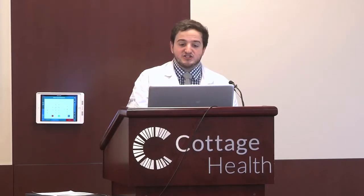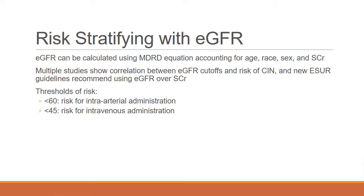What about risk stratifying with estimated GFR? The eGFR is calculated using an equation derived from a large retrospective study accounting for age, race, sex, and serum creatinine. One current recommendation from the ESUR sets the thresholds of risk: patients are at risk with an eGFR of less than 60 for intra-arterial administration (catheter or radiologic procedure), and less than 45 for IV administration.